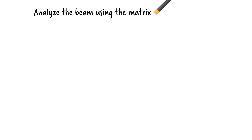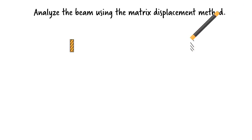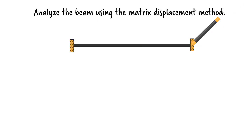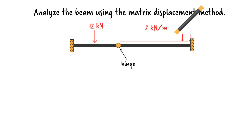Here, we want to analyze a continuous beam with an internal hinge using the displacement method. The beam is fixed at both ends and has an internal hinge 6 meters from the left end.